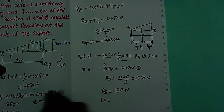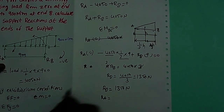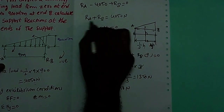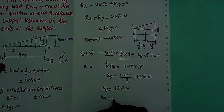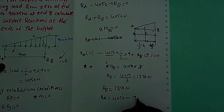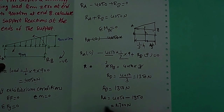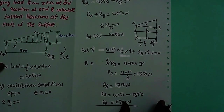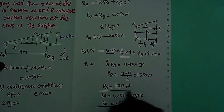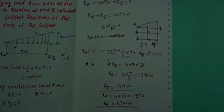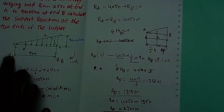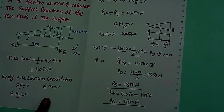RA equals: from RA plus RB equals 4050, we get RA equals 4050 minus 1350, which equals 2700 newtons. So RA equals 2700 newtons and RB equals 1350 newtons. Like this, you can find the support reactions of a simply supported beam with UVL.